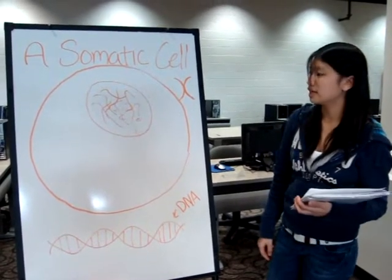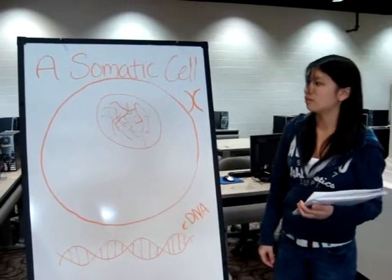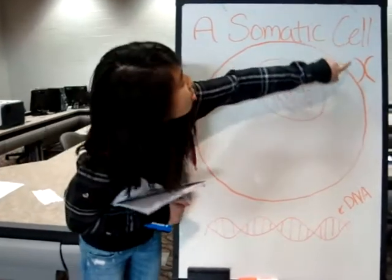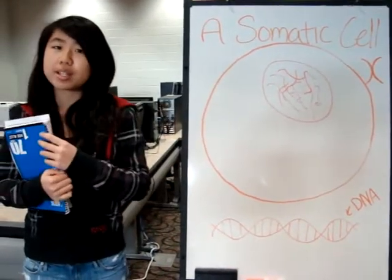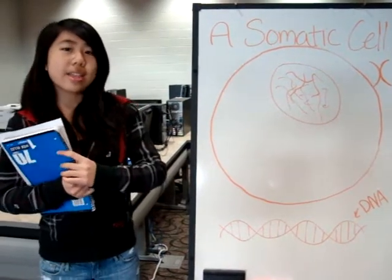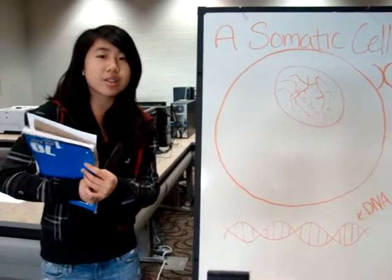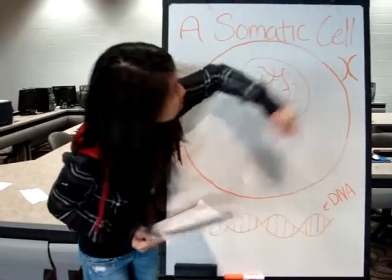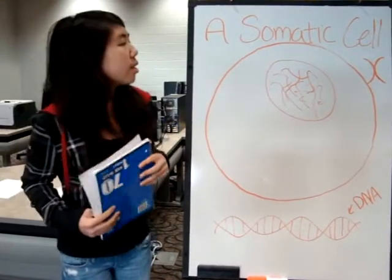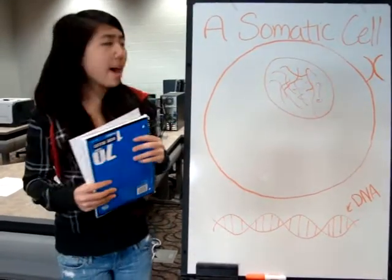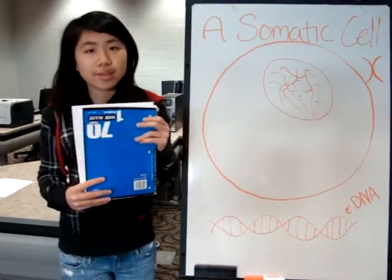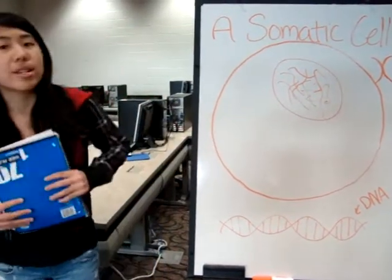In humans, the nucleus contains 46 chromosomes, one set from each parent. Each chromosome is made up of two identical sister chromatids. They are attached by protein complexes called cohesins, and the attraction is called sister chromatid cohesion. The centromere is a region where the sister chromatids are most closely attached. The sister chromatids separate and move to a new nucleus. When that occurs, cytokinesis follows right after and divides the rest of the cell.